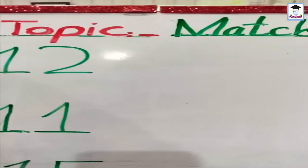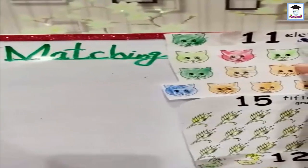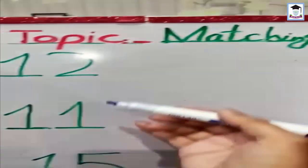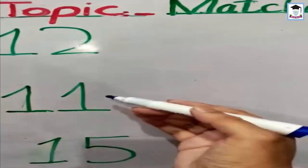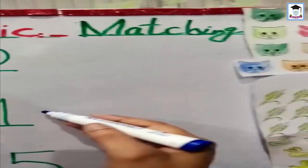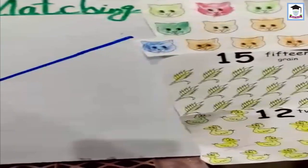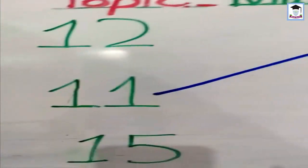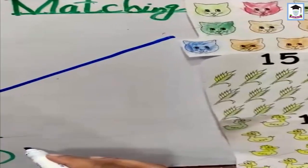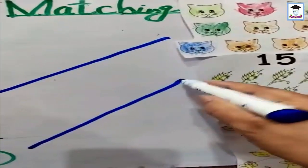Students, now we will do matching — matching the number with the object, and the number with the number name. Like 11 — draw a line to match. 1 lemon — 1, 5 — 15. Draw a line and match. Yes!